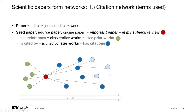This seed paper has references — it cites earlier works, which are the green dots. Later in time, this seed work will be cited by later works, and even those later works will be cited by other works, giving a lot of connections. The citations evolve over time — that is the citation network.